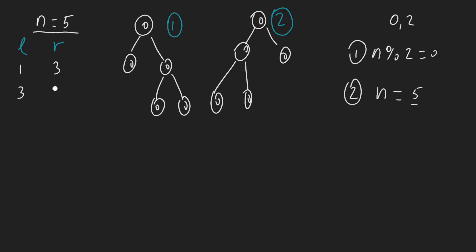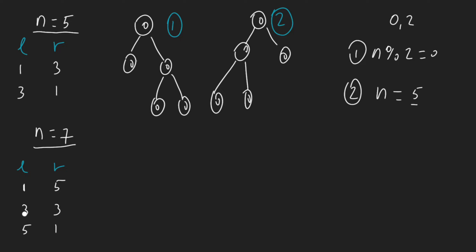Now let's take n equals seven. For our left and right subtrees, the possible splits are: one on the left and five on the right; three on the left and three on the right; and five on the left and one on the right. We increment the left by two — one, three, five — and decrement the right by two — five, three, one.